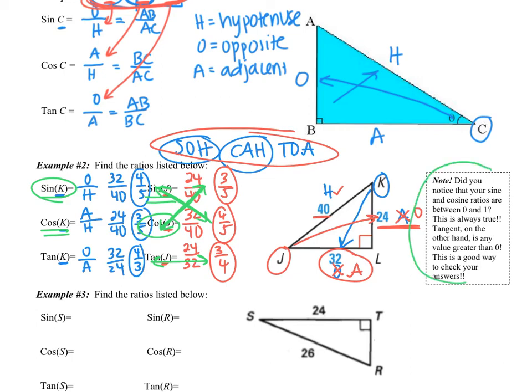Another way is this box that you can see to the right. Did you notice that your sine and cosine ratios are between 0 and 1? So all four of these ratios that we got are fractions between 0 and 1. That'll always be the case. Tangent, on the other hand, is just bigger than 0. So tangent can be any value bigger than 0.